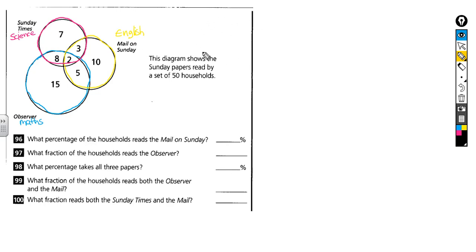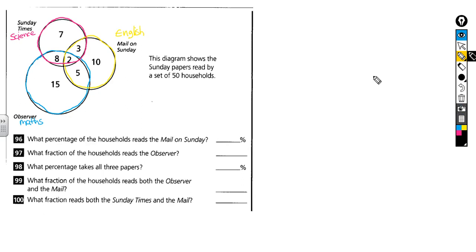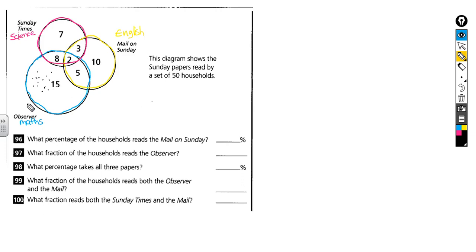The teacher says to the 50 children stood on the side: please go and stand in the circle that represents the subject you really really like. So imagine 15 children run and stand in the maths circle. Then we have another five children who've decided to stand in the bit of the circle where maths and English overlap.